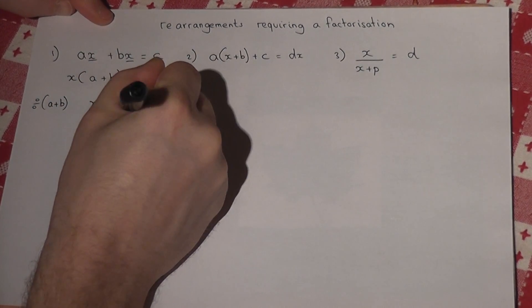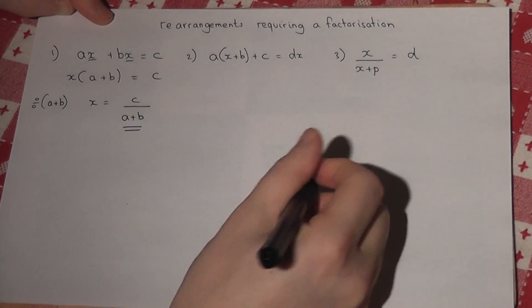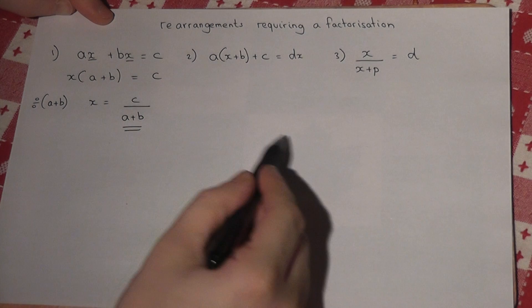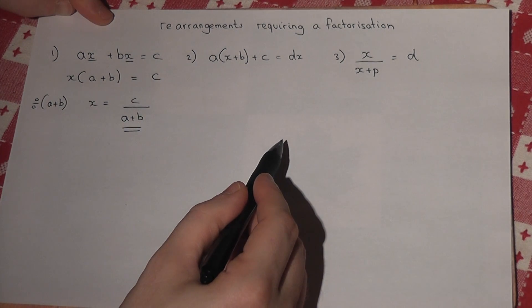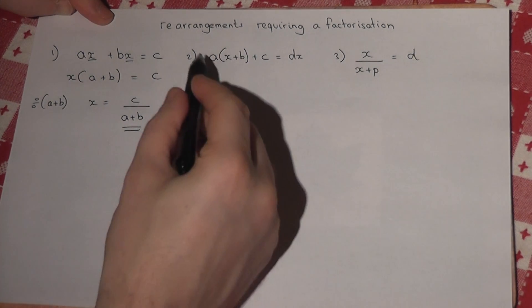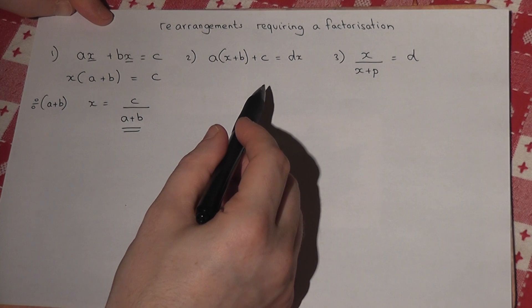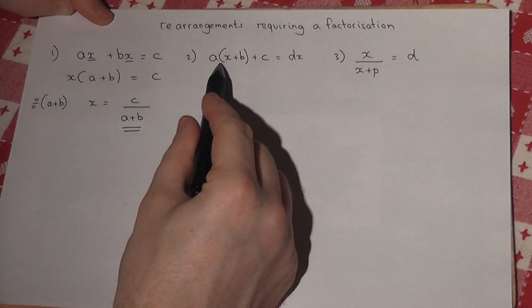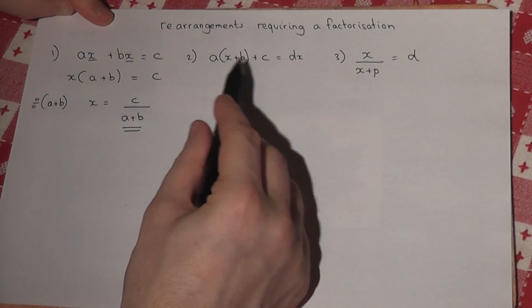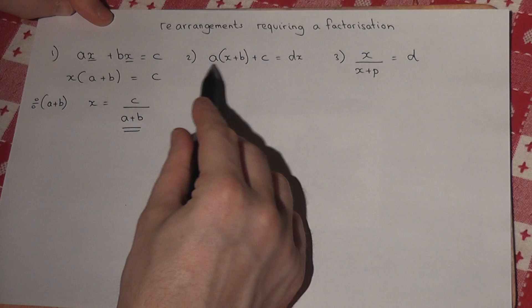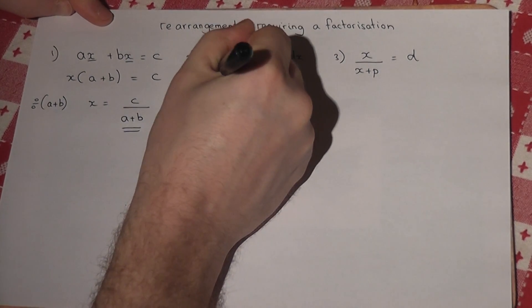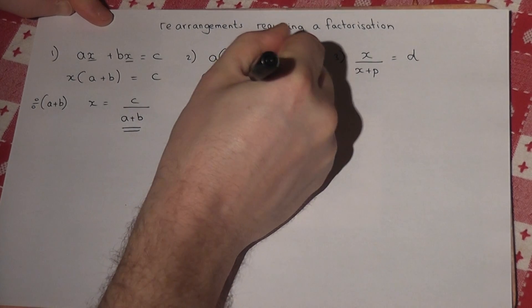I don't require the brackets in the final answer. Now in the second example, we need to do a few steps first. There's the x here and the x over there. I'll begin by expanding that to make the whole thing simpler: ax + ab + c = dx.